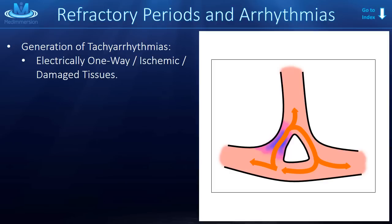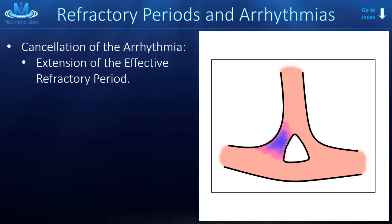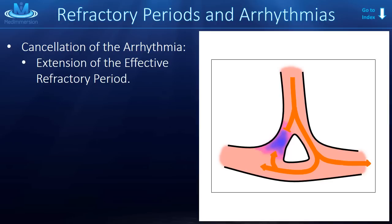If we take that same example of ischemic tissue in the Purkinje fibers but change the refractory period by adding a drug, the action potential begins and comes down through the tissue. You can see that the refractory period is now longer — the previous tissue is not yet reset. The action potential splits at the branch point, and when it tries to come back up through the one-way ischemic tissue, the tissue on the other side is not yet past its refractory period, so it cannot continue in that loop. We've essentially squashed the arrhythmia by lengthening the refractory period.